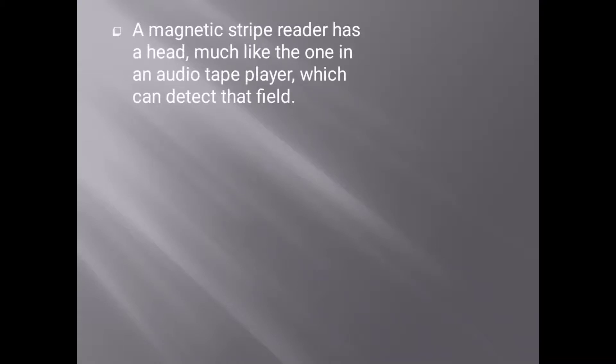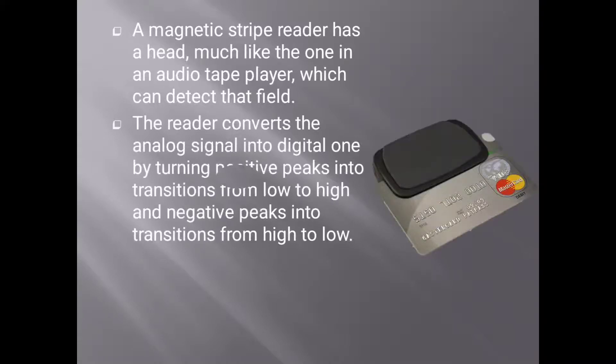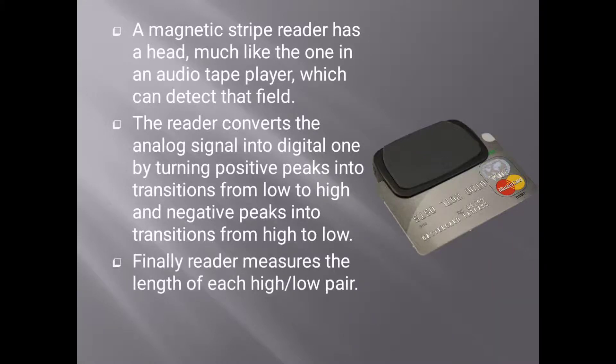A magnetic stripe reader has a head much like the one in an audio tape player, which can detect the field. The reader converts the analog signal into digital one by turning positive peaks into transitions from low to high, and negative peaks into transitions from high to low. Finally, the reader measures the length of each high and low pair. This is how the reader detects the information on the stripe.